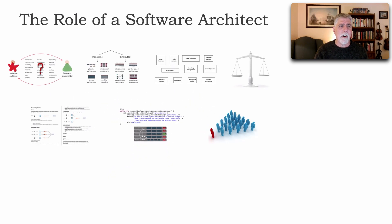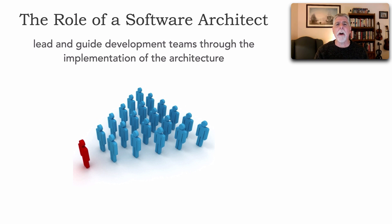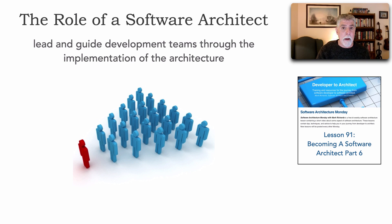The last thing I want to talk about on the role of a software architect — and perhaps second most important alongside trade-offs — is to lead and guide development teams through the implementation of the architecture. Leading and guiding development teams means building up soft skills: facilitation, coaching, and mentoring, to guide your team through implementation. Lesson 91, the last segment on becoming a software architect, covers some of these aspects of leading and guiding development teams.